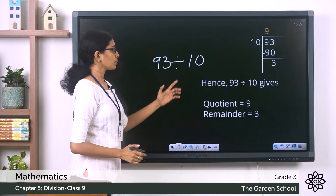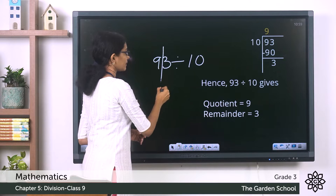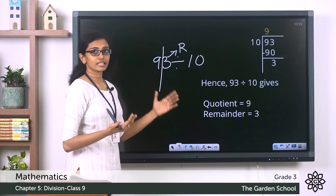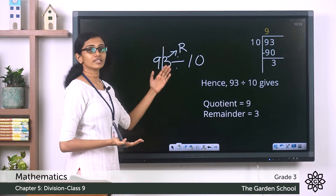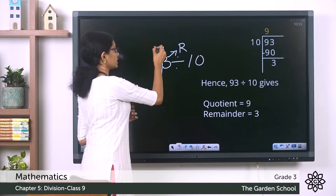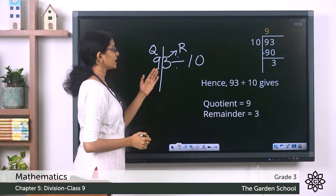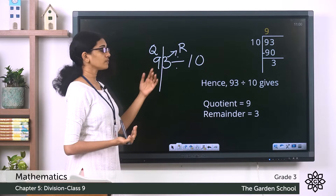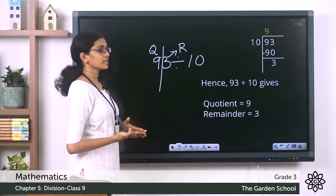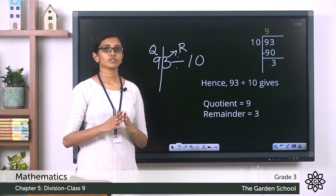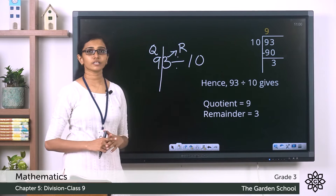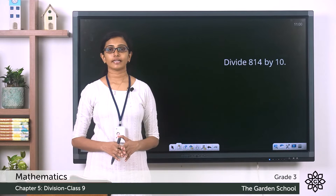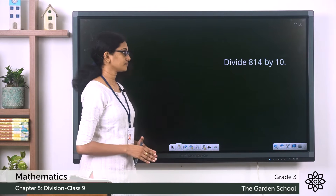Let's look at the question once again. Our question was 93 divided by 10. When we did the division, we got the remainder as the ones digit of the dividend, and the quotient was the digits remaining to the left of the ones digit. In this case the ones digit is 3 and the digit to the left was 9, which is the quotient. I hope that is clear.